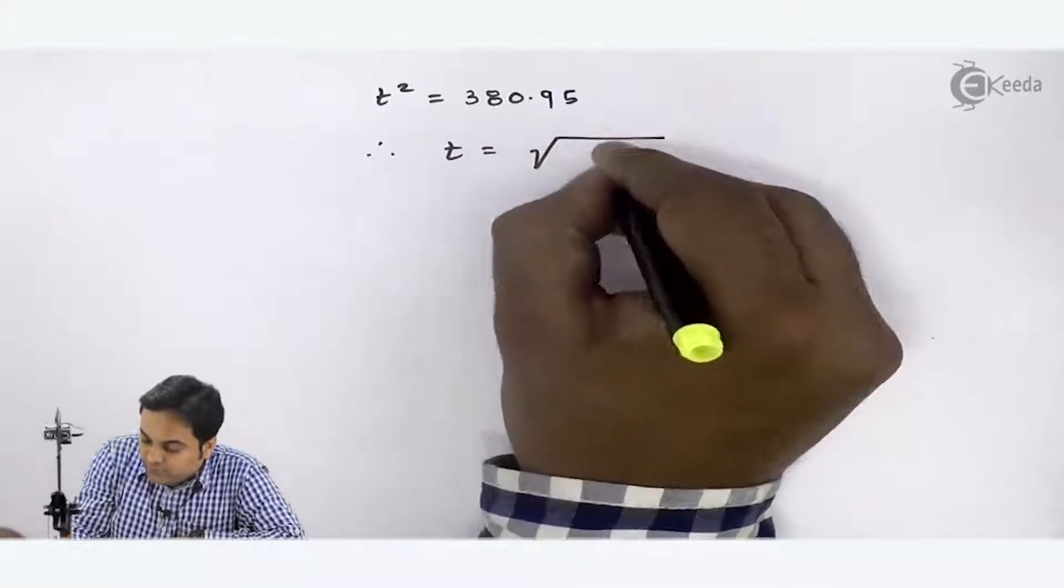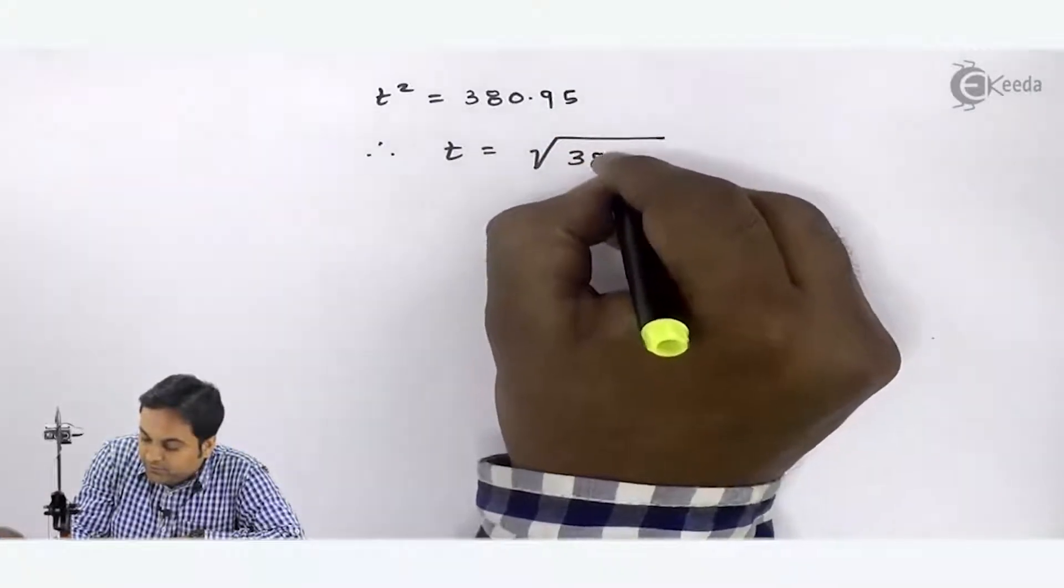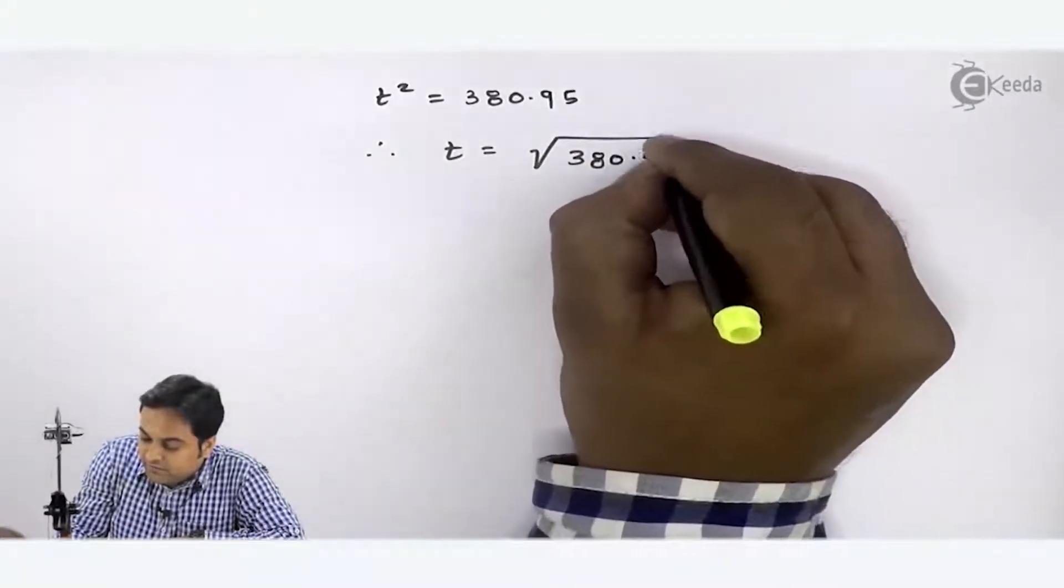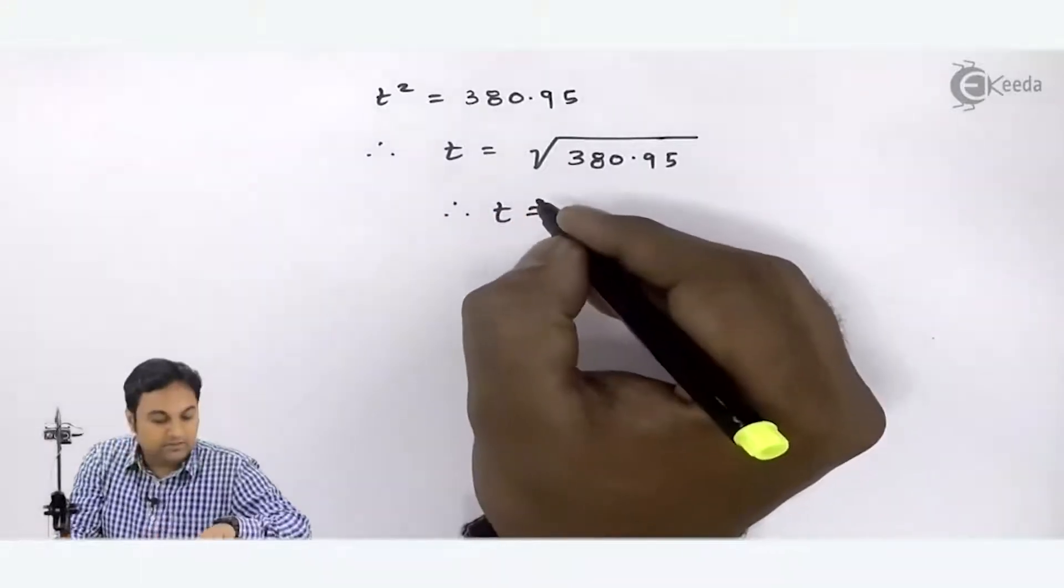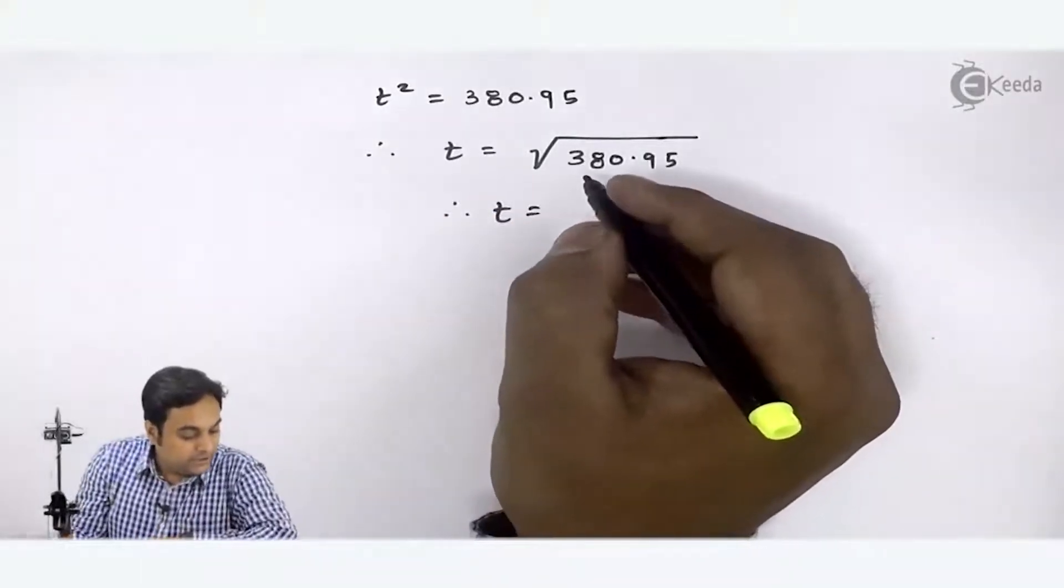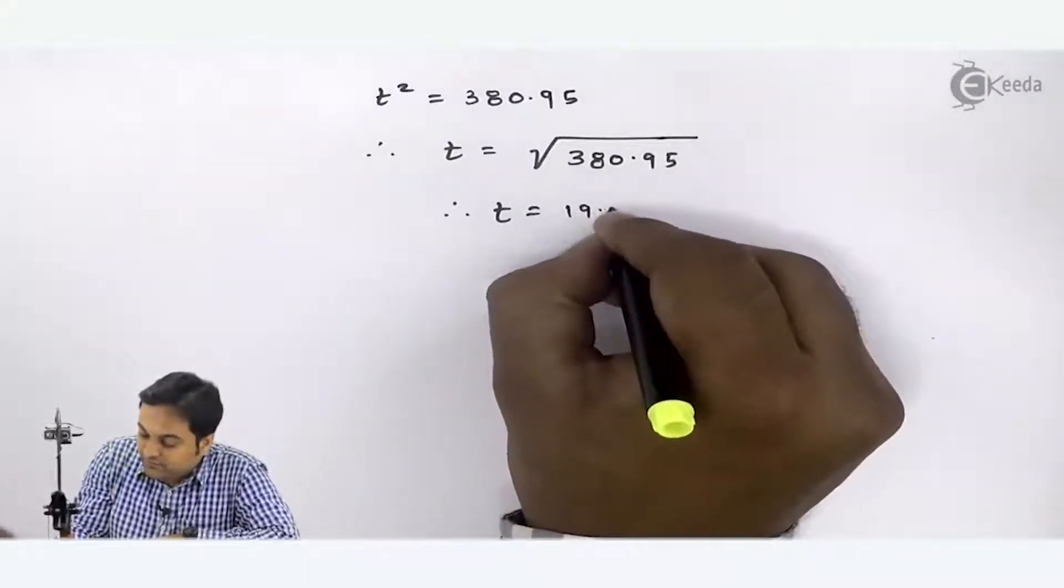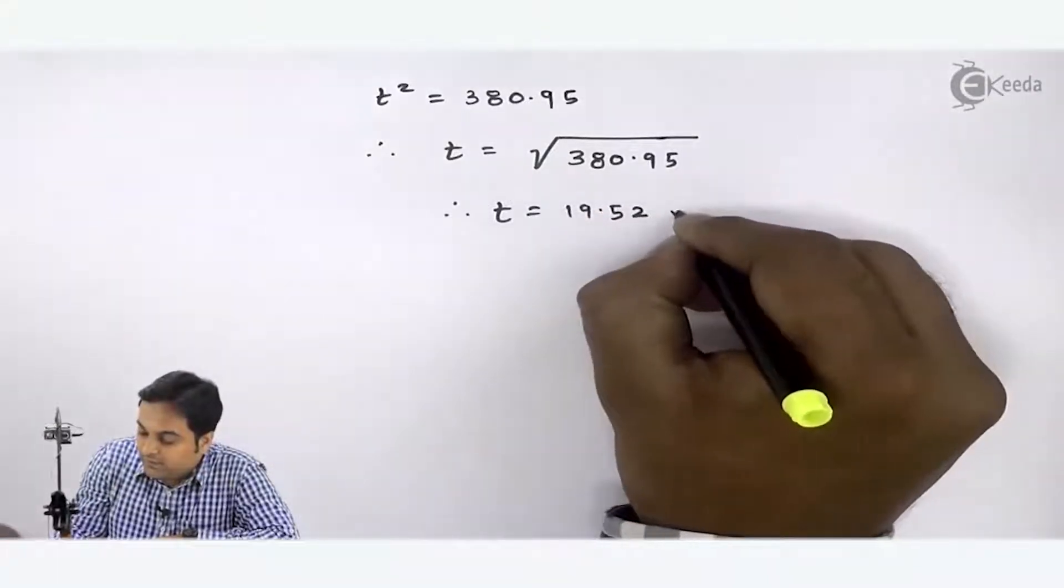Now we don't require T square. The answer is 380.95, but we want only T. So T will be the square root of 380.95.